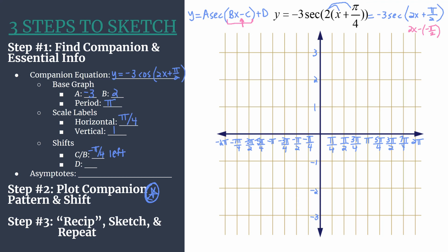And then d, we don't actually have a term d here. That would be after the function, the secant or the cosine function. So no vertical shifting is going on here.